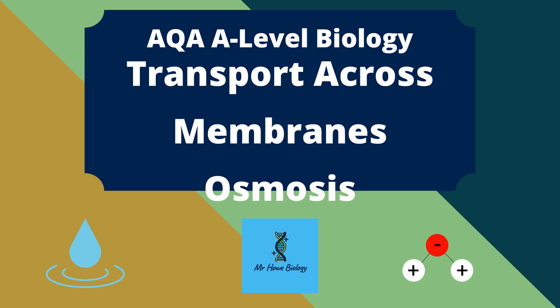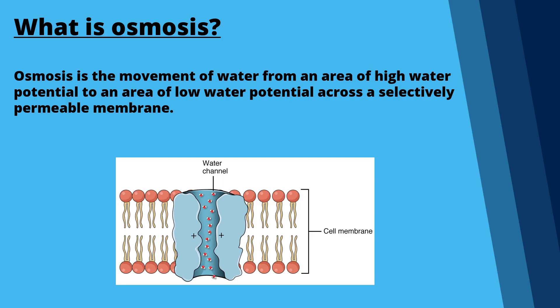Today we're going to be looking at osmosis. Osmosis is the movement of water from an area of high water potential to an area of low water potential, across a selectively permeable membrane.